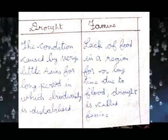Difference between drought and famine. Drought: The condition caused by very little rain for a long period, in which biodiversity is affected. Famine: Lack of food in a region for a long time due to flood or drought is called famine.